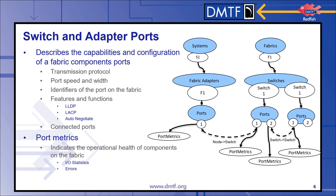Ports describe the capabilities and configuration of a fabric component's port. This could include the transmission protocol, port speed, width, identifier of the port on the fabric, and some possible features or functions of that port like LLDP, LLACP, or auto negotiation. Ports can collect metrics that indicate the operational health of the component of the fabric. Some example metrics are IO statistics and errors encountered by the port.